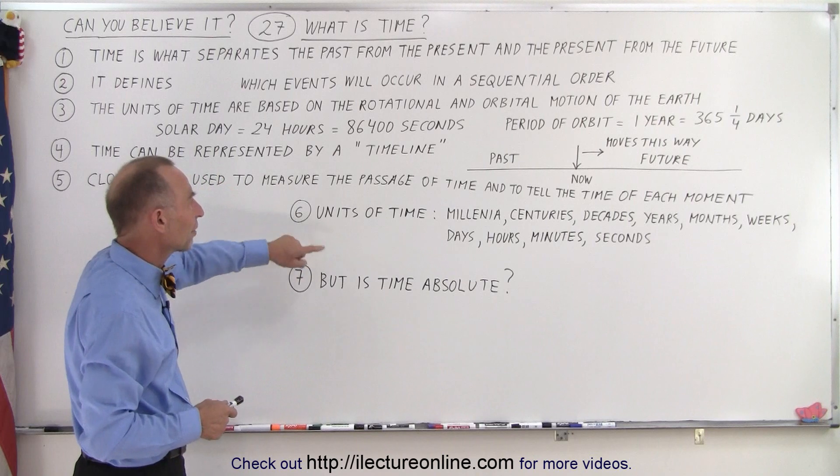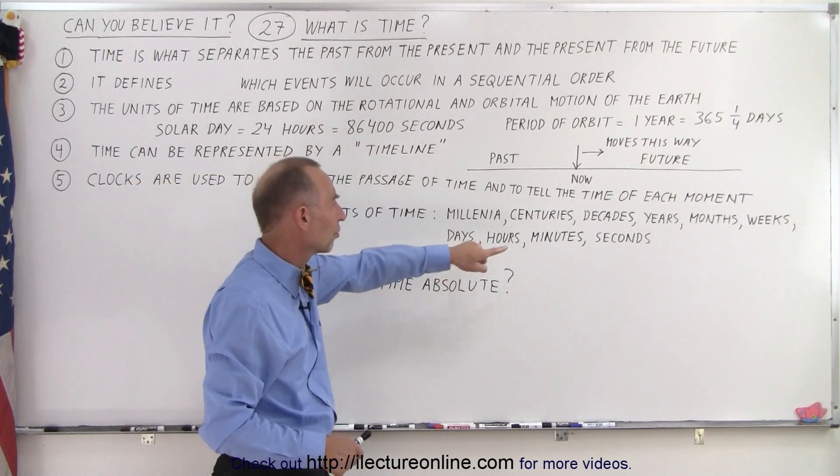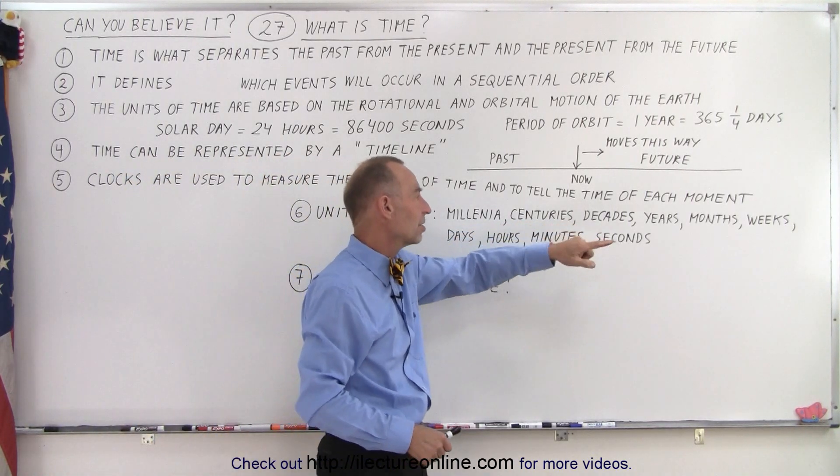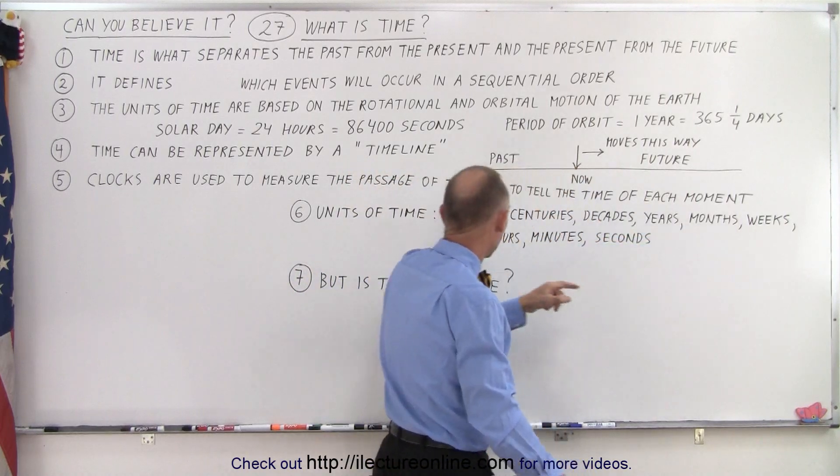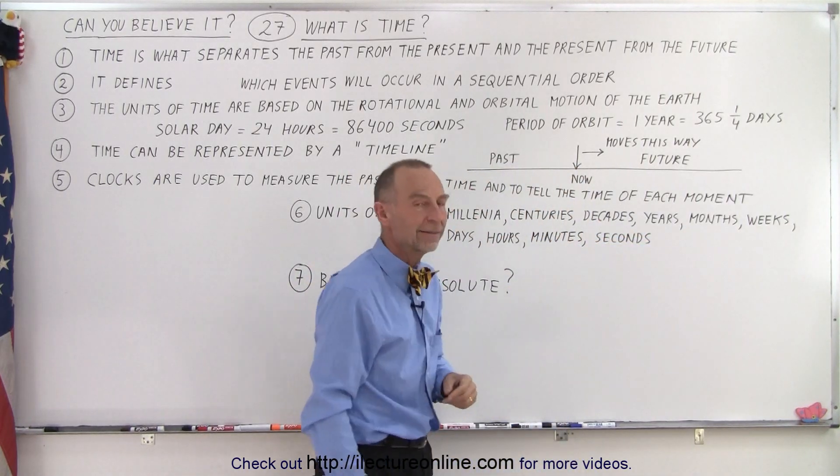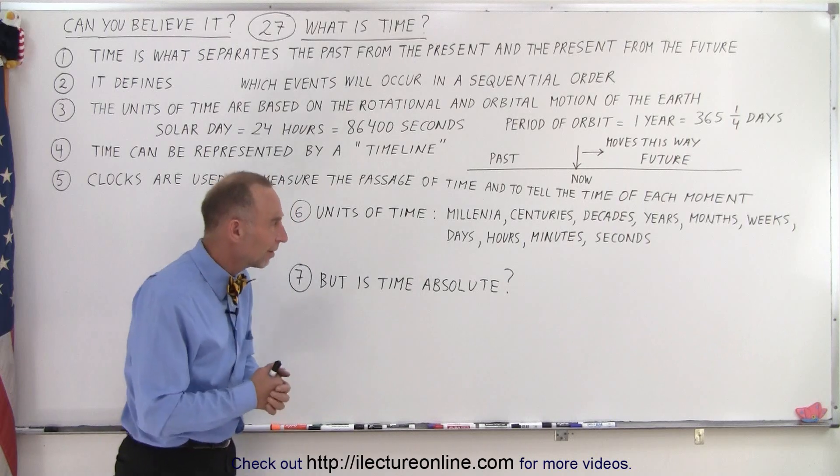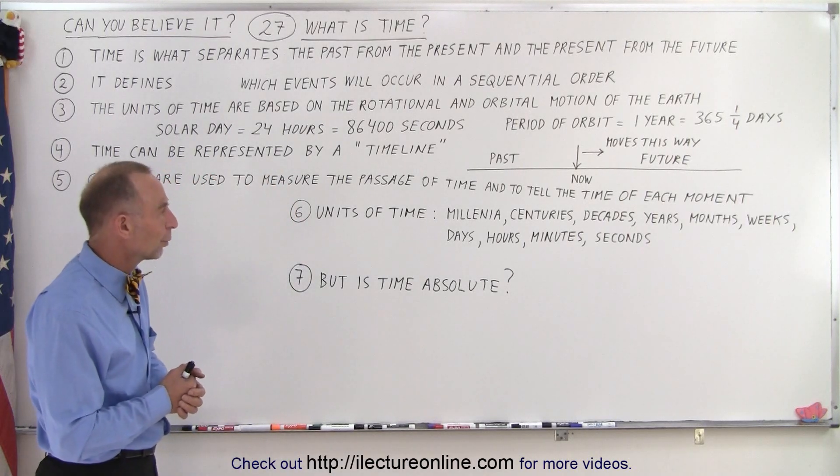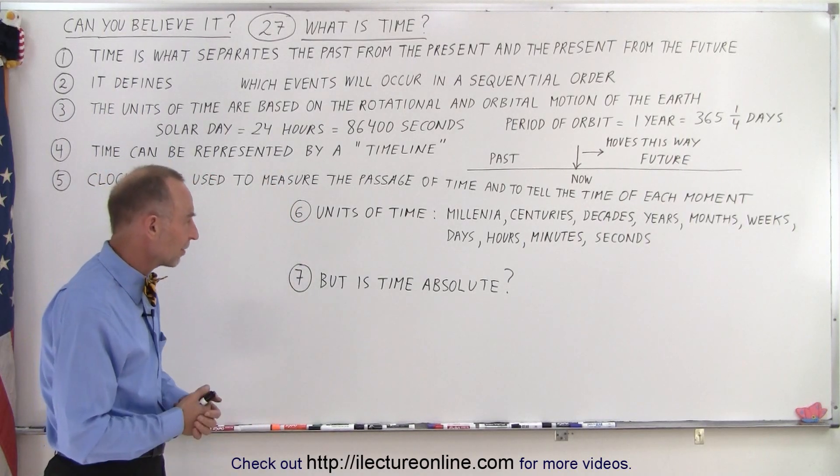The units of time: we have millennia, which are 1,000 years, centuries, 100 years, decades, 10 years. We have years, months, weeks, days, hours, minutes, and seconds. So we have some neat grouping of words describing the different lengths of time.